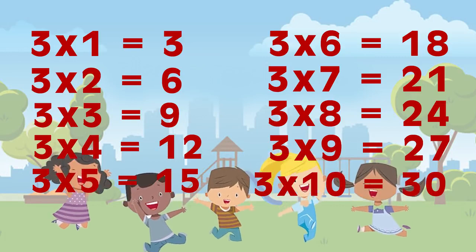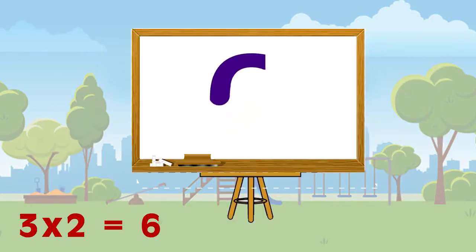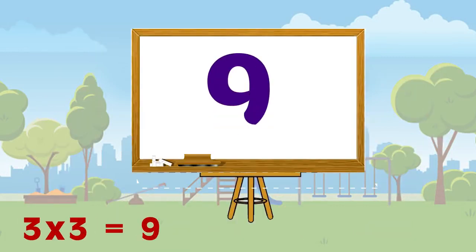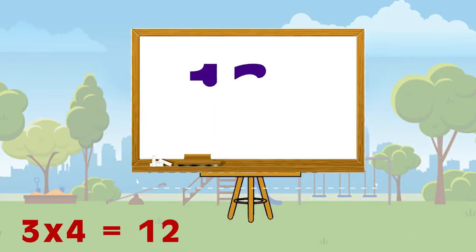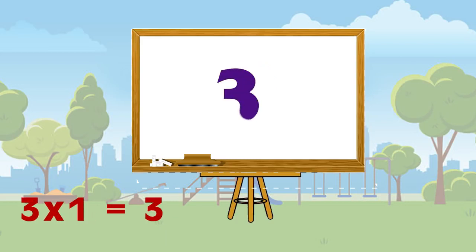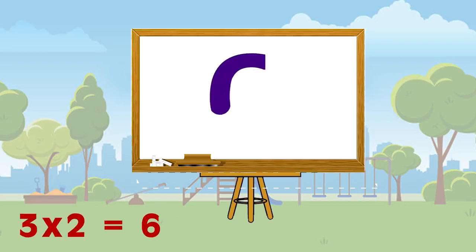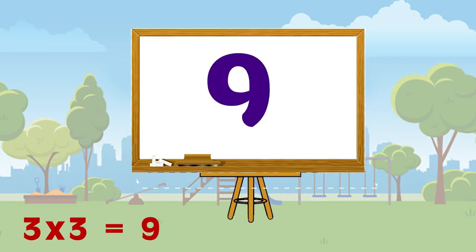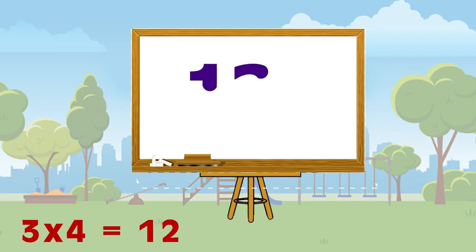Three ones are three, three twos are six, three threes are nine, three fours are twelve. Three ones are three, three twos are six, three threes are nine, three fours are twelve.